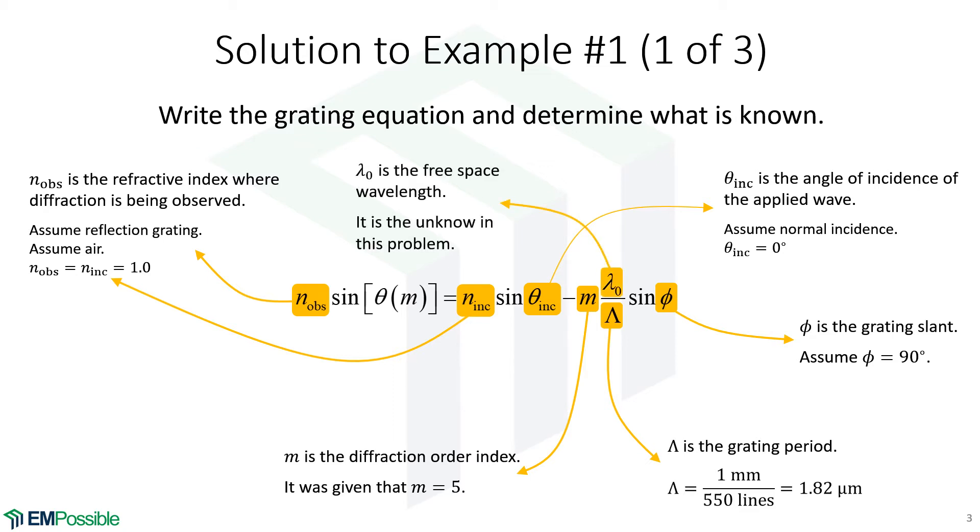The free space wavelength. This is what it's asking for. So we need to figure out what's the biggest number we can put in for that free space wavelength such that our angle is a purely real number.